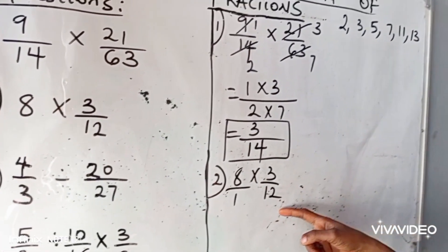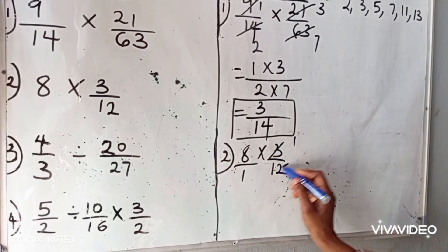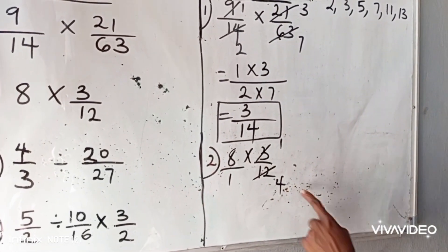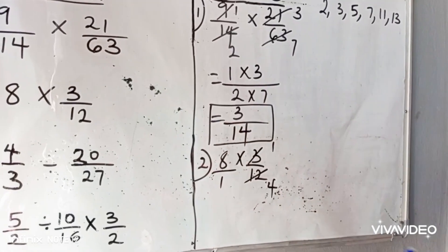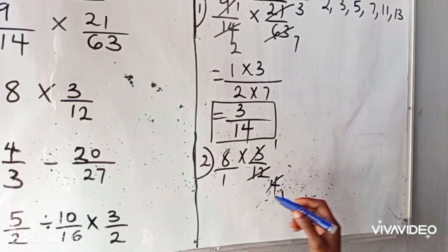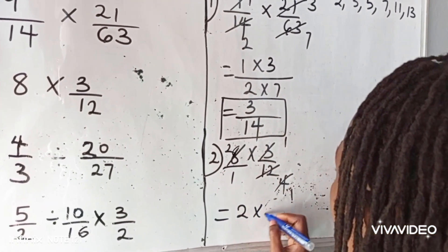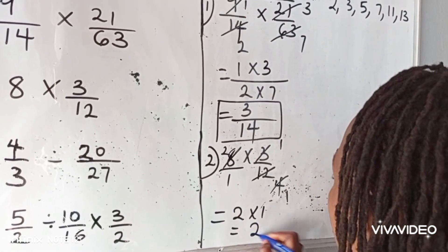Now let's check. Can 3 go into 12? Yes. 3 here, 1. 3 here, 4. What else can go? 8 and 4. Yes. 4 can go into 12. So 4 here, 1. 4 in 8, 2. So we have 2 times 1, which is equal to 2.